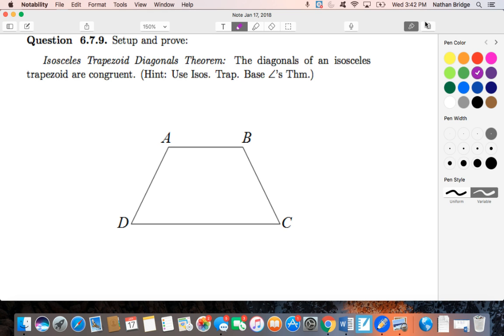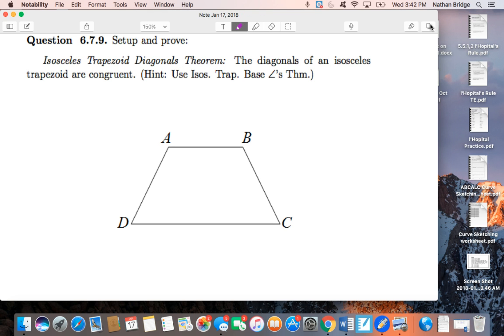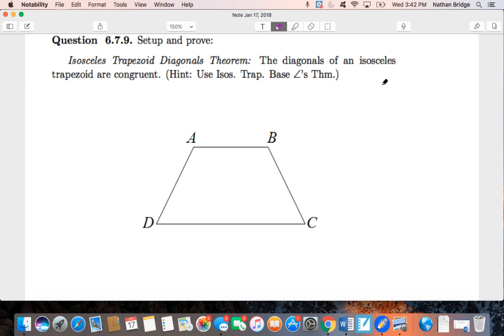The isosceles trapezoid diagonals theorem, one of my favorites. The diagonals of an isosceles trapezoid are congruent. The first thing I notice is that this isn't written as an if-then conditional statement. So how am I even supposed to get started with my proof? Well, I think a good first move will be to rewrite this as an if-then conditional statement. What are we really talking about here?